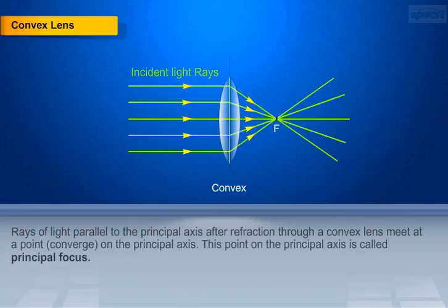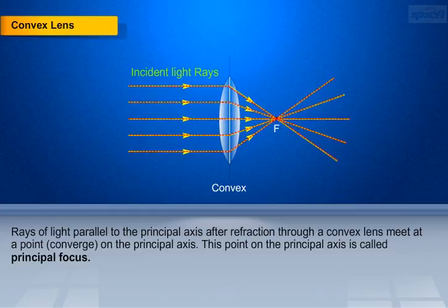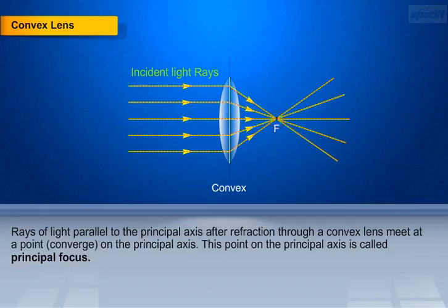Rays of light parallel to the principal axis, after refraction through a convex lens, meet at a point — they converge — on the principal axis. This point on the principal axis is called the principal focus of the convex lens.